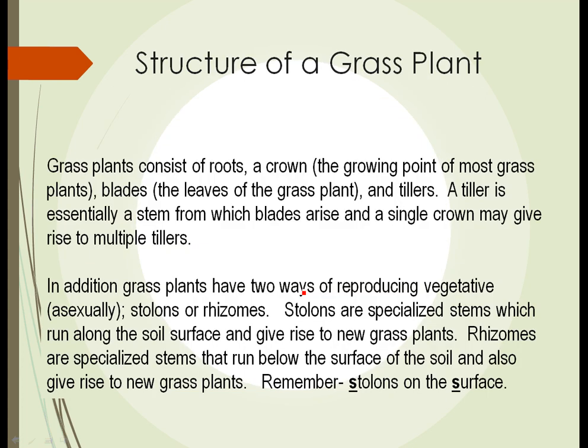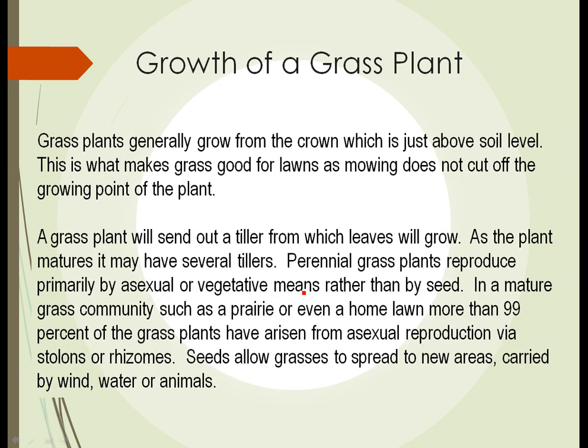The next slide is basically a recap of the information I've just given you. Grass plants typically grow from the crown, just above the soil level. It sends out tillers and the leaves grow from the tiller. As grass plants mature, they can have several tillers. Perennial grass plants, like the type of grass that makes up your lawn, reproduce primarily vegetatively or asexually, as opposed to by seed. In a mature grass community, like your lawn or a prairie, 99% or more of the grass plants have arisen from asexual reproduction via stolons or rhizomes.